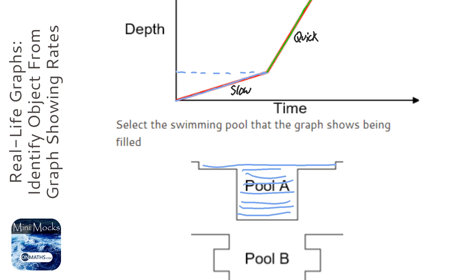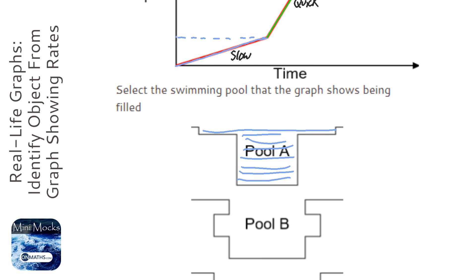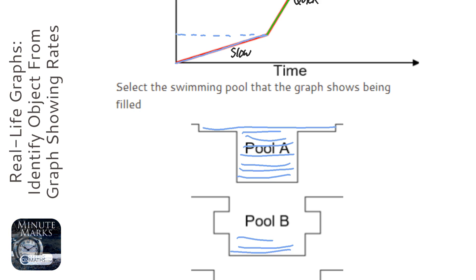Pool B will start really quick, take a little bit more time here because it's got a wider pool bit to fill, and then end really quickly. So it's quick, slow, quick - we don't want that.